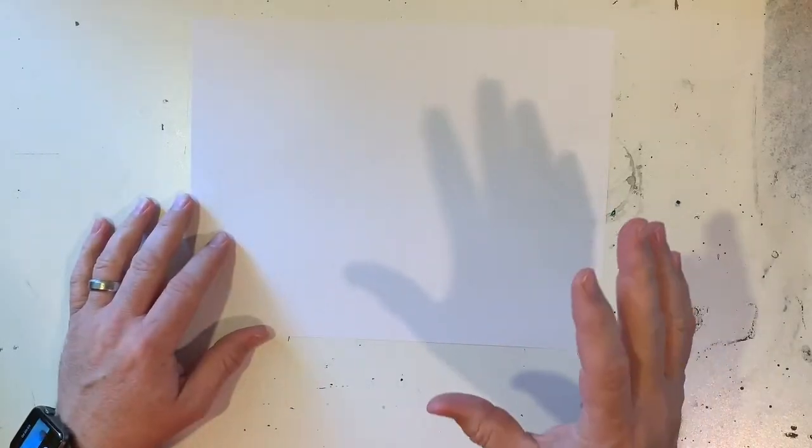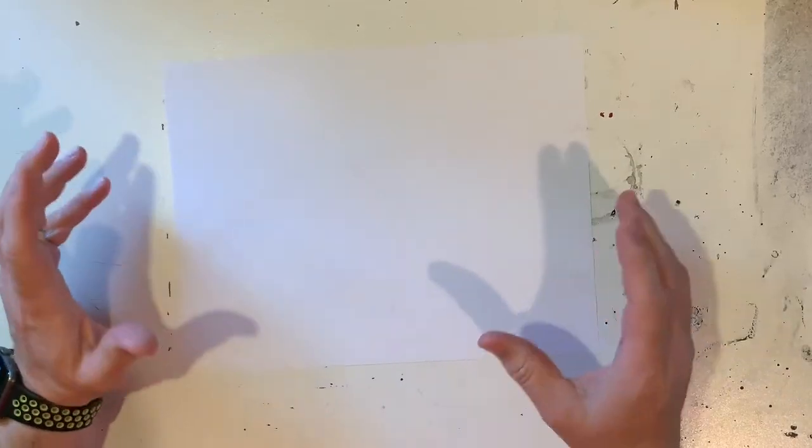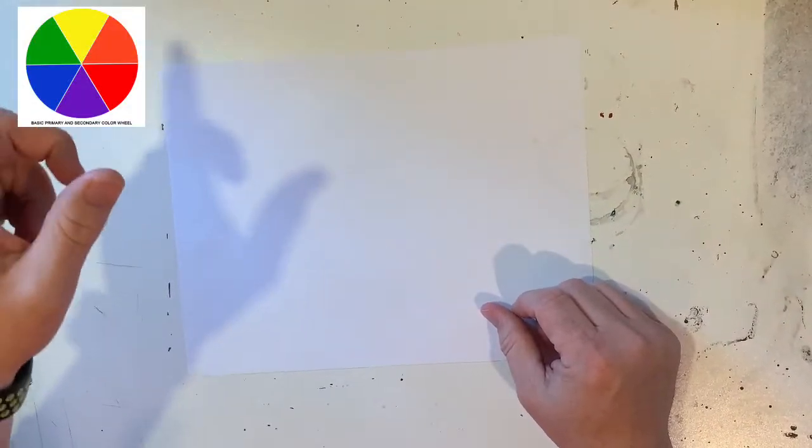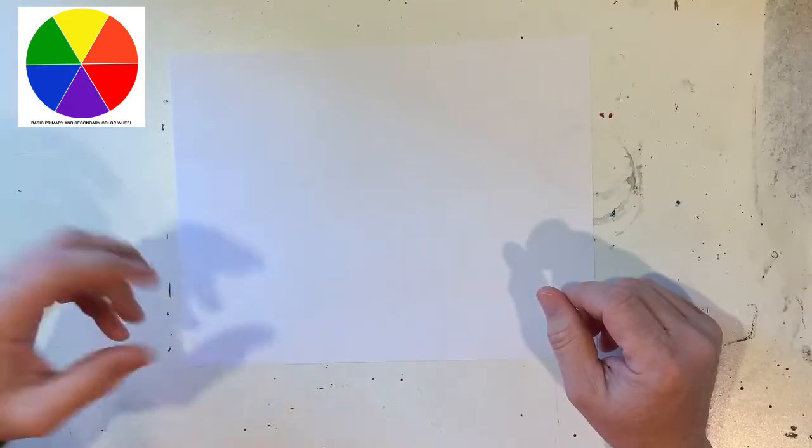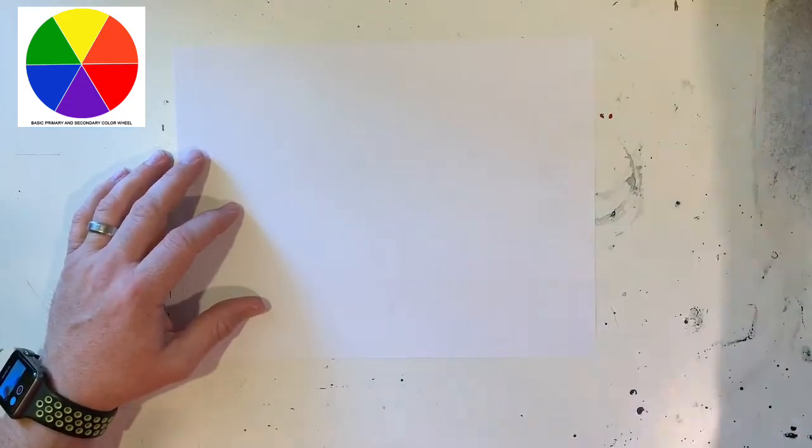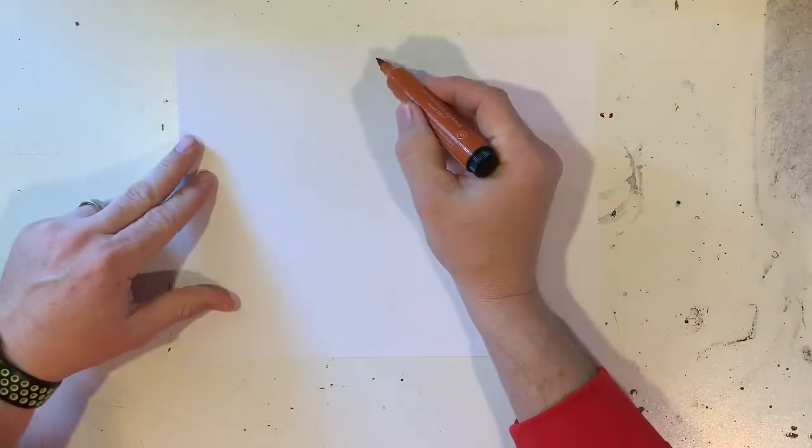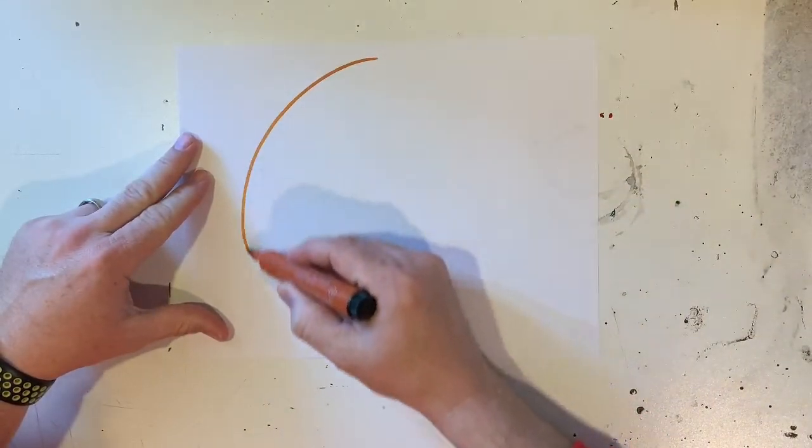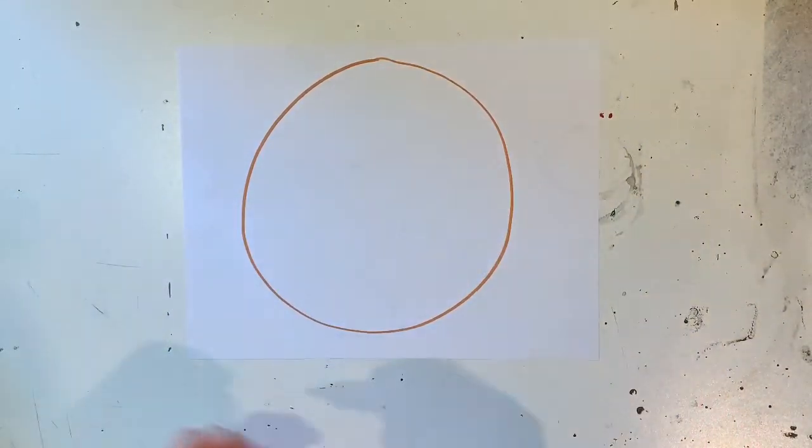So for this part of the video, what I want to show you is just how to draw and make your own very basic, simple color wheel. In the corner of the video, you should be able to see a little color wheel, very simple one that you could kind of copy for your own. With my blank piece of paper, I'm going to draw with a marker or whatever you have, pencil doesn't matter, a circle. Doesn't have to be a perfect circle or anything like that.